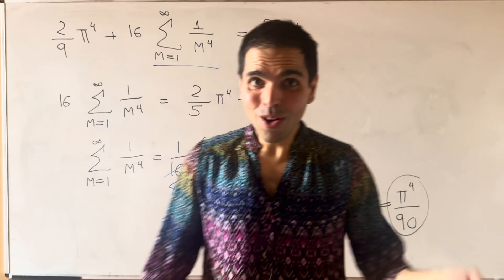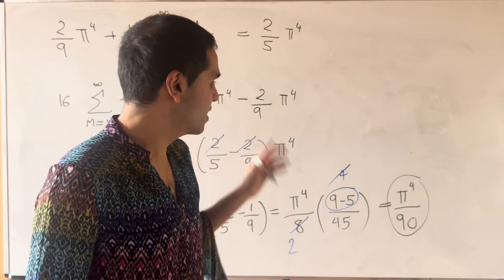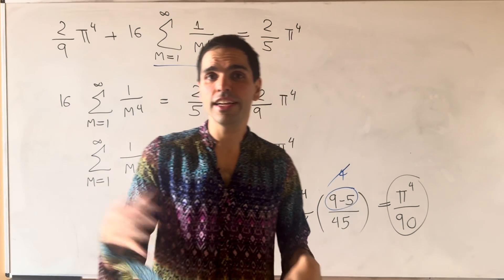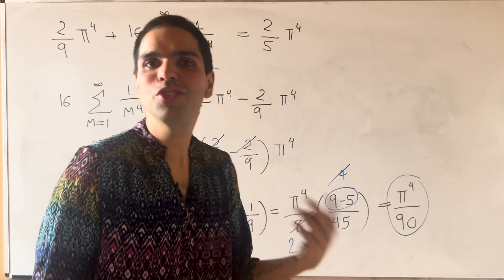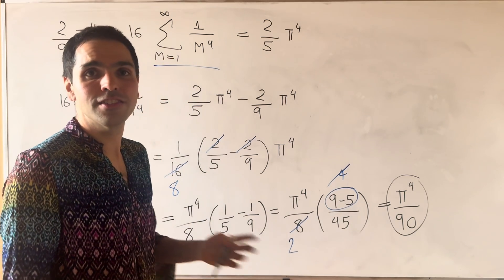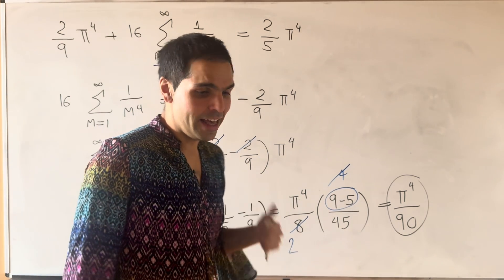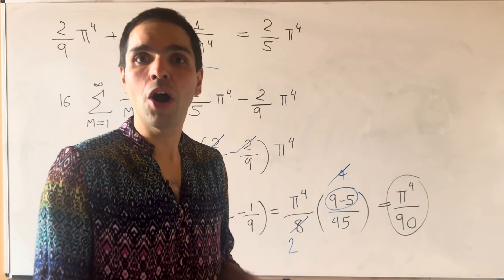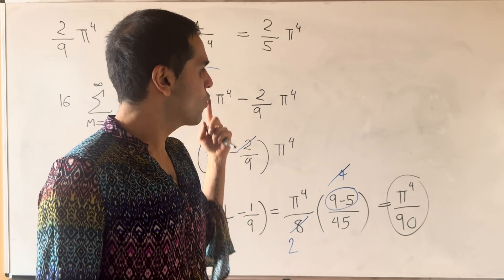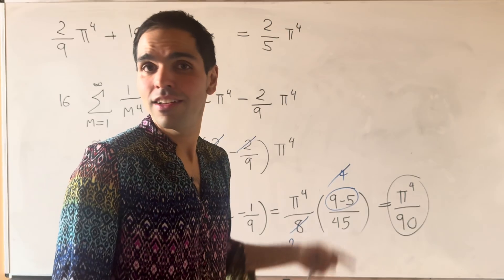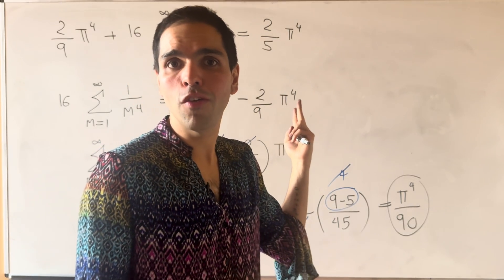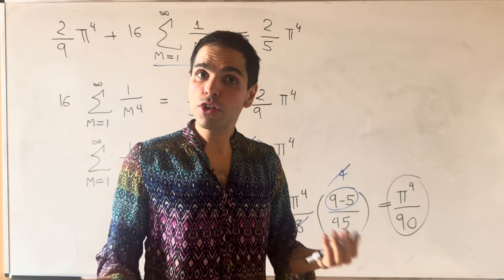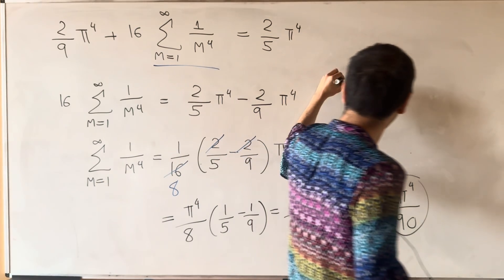Oh who would have known that we can really explicitly calculate this sum and the cool thing is the more power functions you take the more fun sums we have and by the way you may ask so we calculated the sum of 1 over m squared the sum over 1 over m to the 4th we can also do the sum of 1 over m to the 6th m to the 8th but you may wonder what about the following sum?